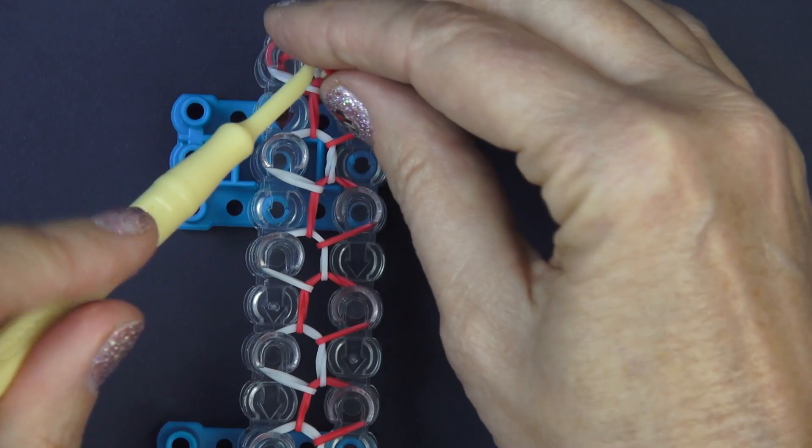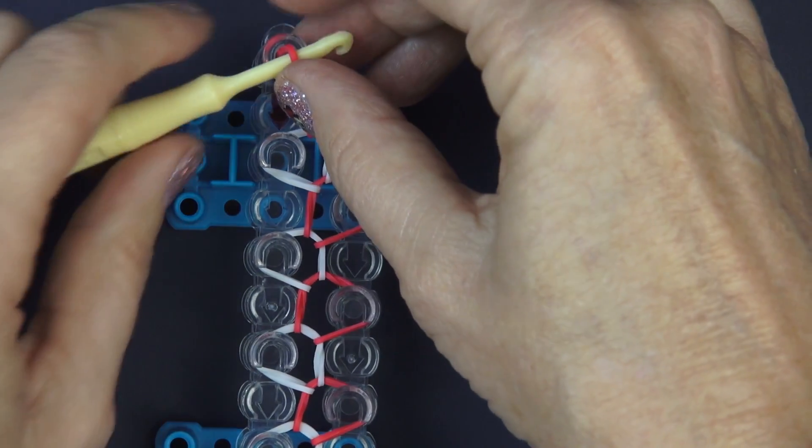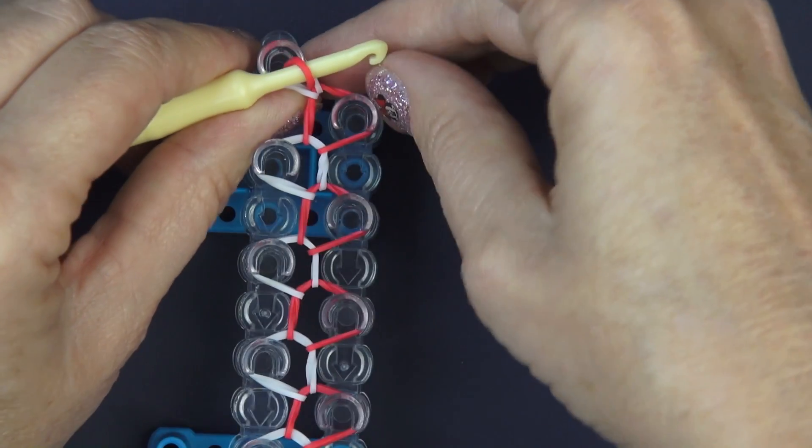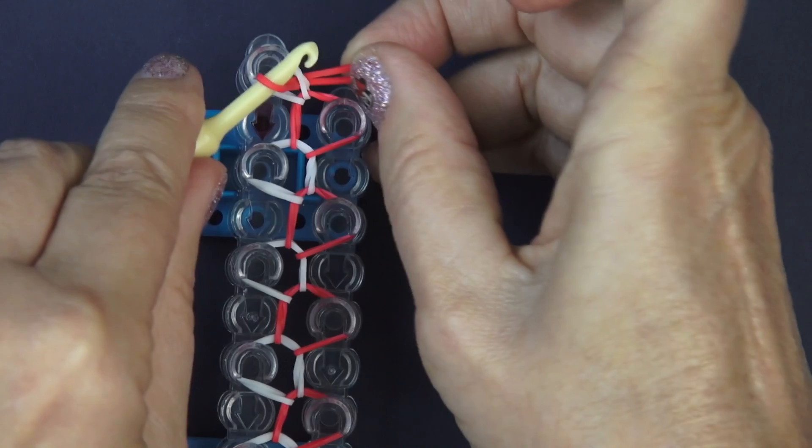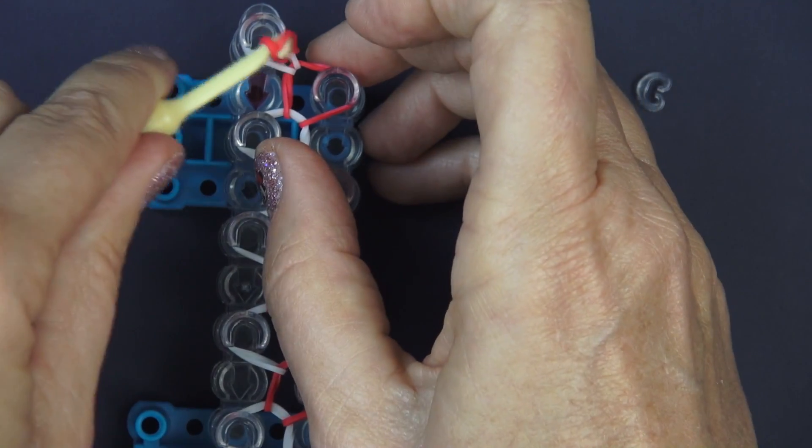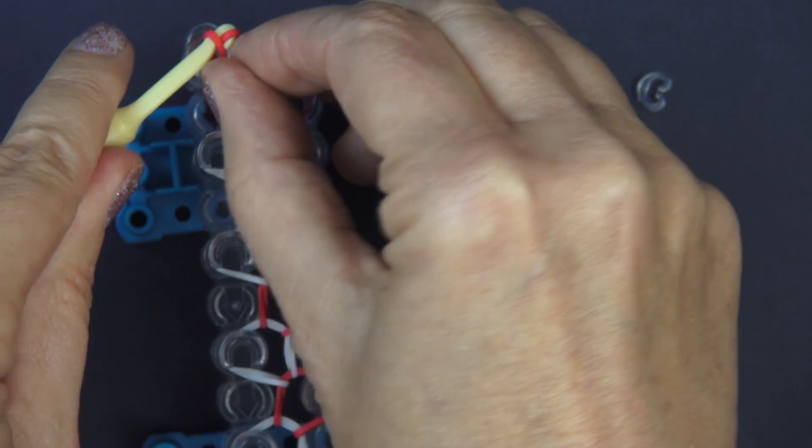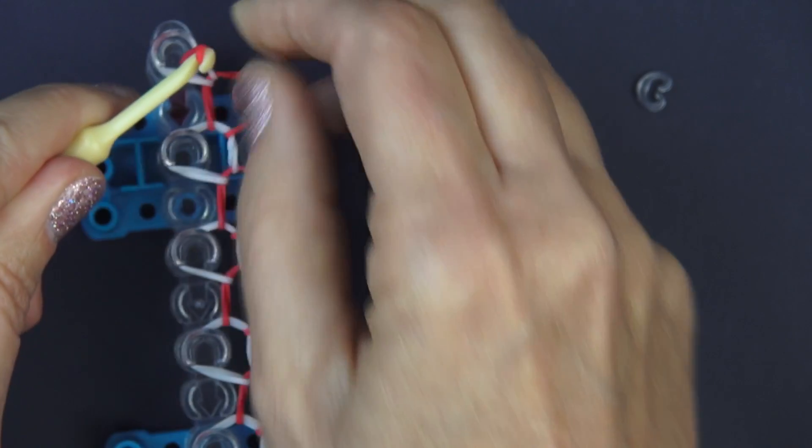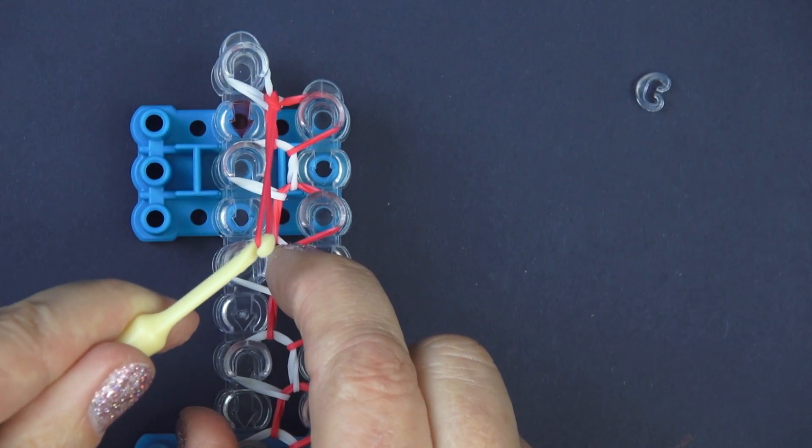And then you're going to turn it around. This is a little tricky, your little fingers are probably going to do it even better than me, but you pull this part of the rubber band, see that, and you bring it through the rubber band, the other side of it like that, and you pull.